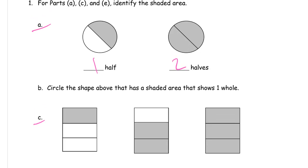And then it says for B, circle the shape above that has a shaded area that shows one whole. Well, that's the whole thing shaded in, so I'll circle that one.